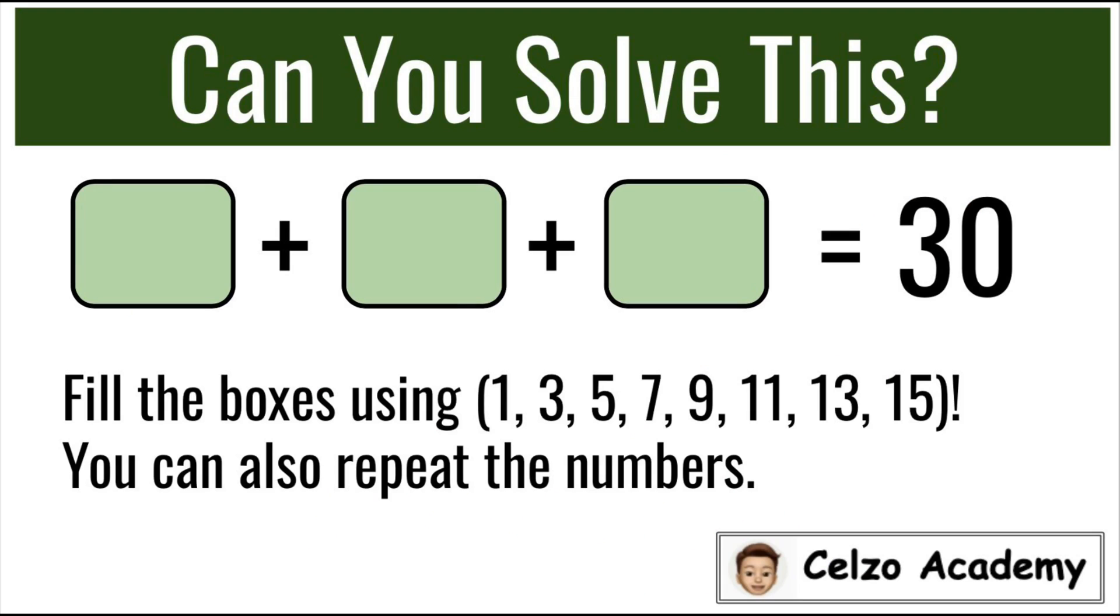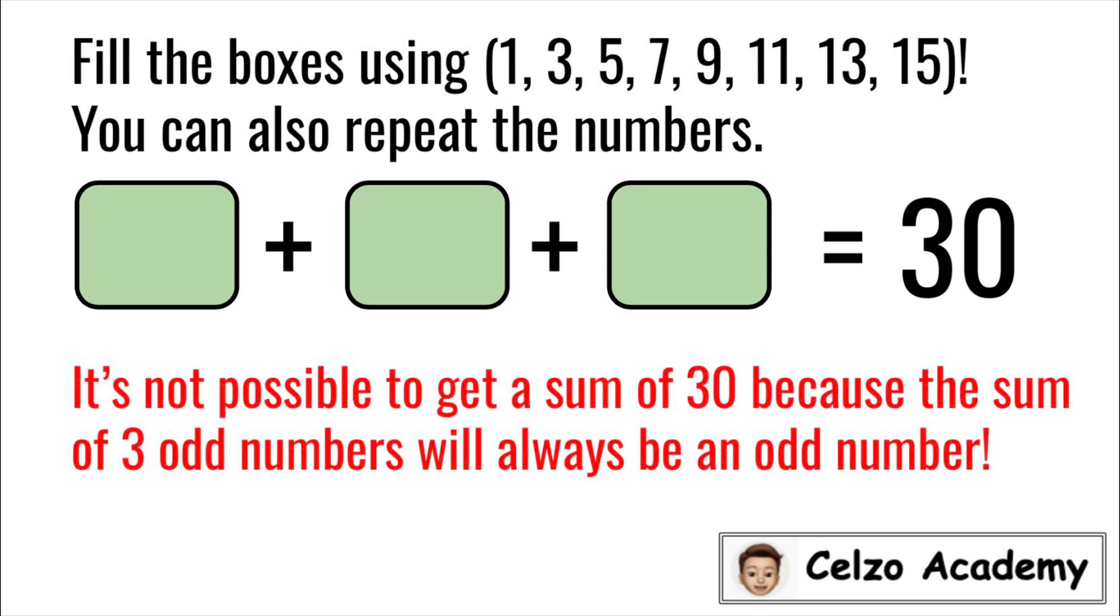The common response to this problem is that it's not possible to get a sum of 30. Since all the given numbers are odd numbers, there's no way you can get a 30 if you add 3 odd numbers. Because the sum of 3 odd numbers will always be an odd number.